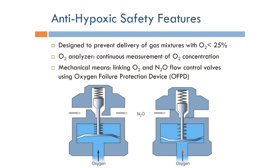Whenever the oxygen pressure goes below 200 to 250 kilopascal, which is very critical, this spring here will force this piston down. This closes the path for nitrous oxide — so if the oxygen pressure is low, the nitrous oxide is stopped.